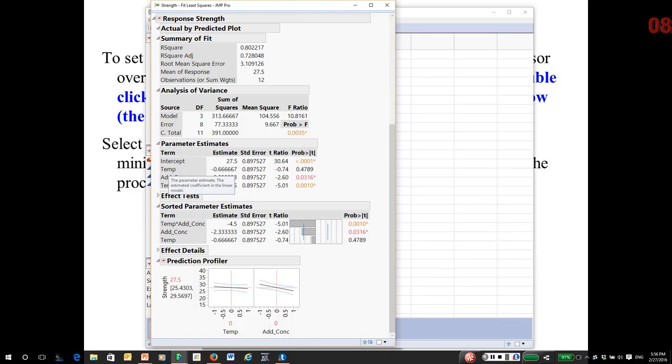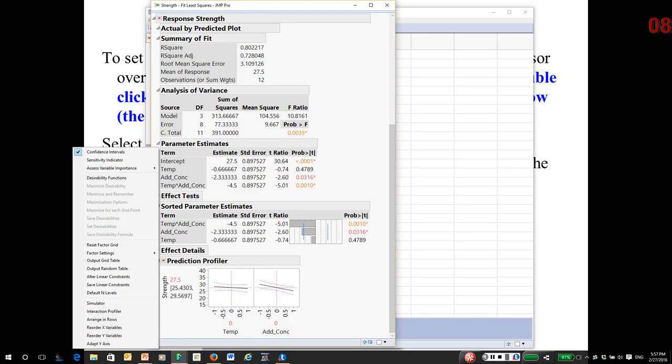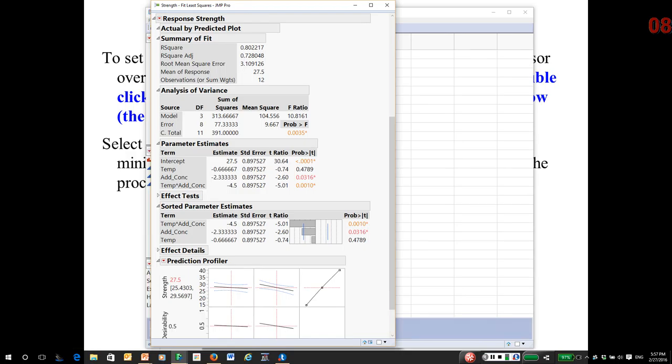I want to find the most optimum settings of temperature and concentration. Then using the model and the desirability functions, JMP is going to do essentially a brute force search through the experimental region to try to find the settings that will result in the most desirable response.